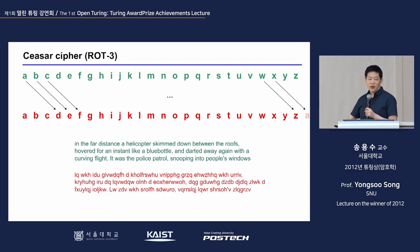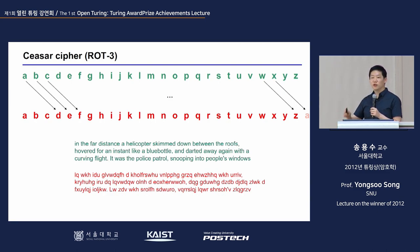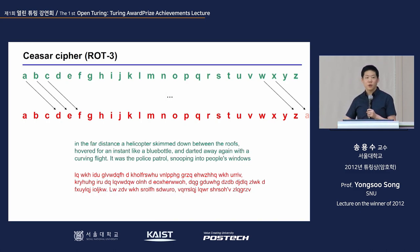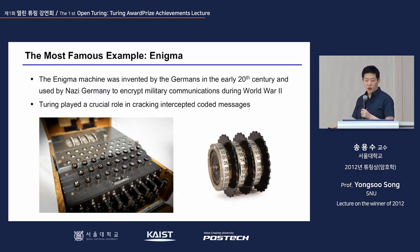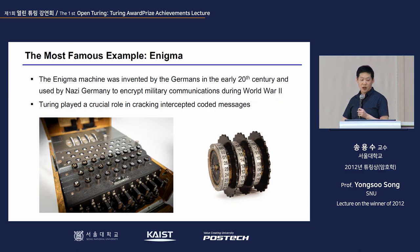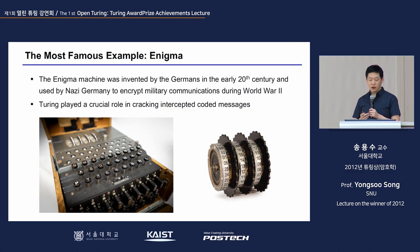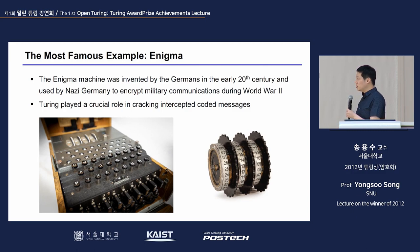The beginning of classical cryptography goes back to the BC era. A very simple type is the Caesar cipher, or shifting cipher — you simply change the order or number of the alphabet. A more modern example would be Enigma, a machine developed in Germany in the early 20th century, used by Nazi Germany to encrypt military communications during World War II.